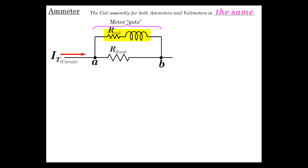And then we have a current flowing in. We have the total current. We'll just call that I, just the current in the circuit that we're measuring.